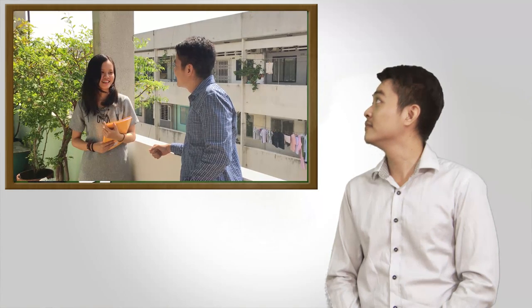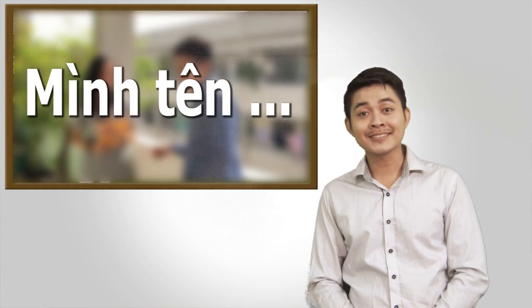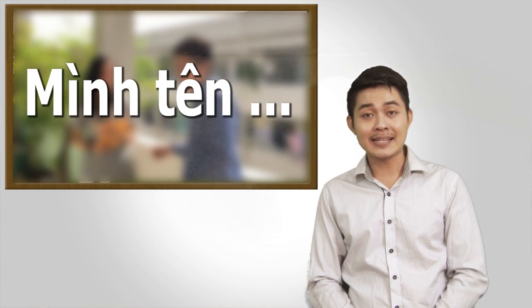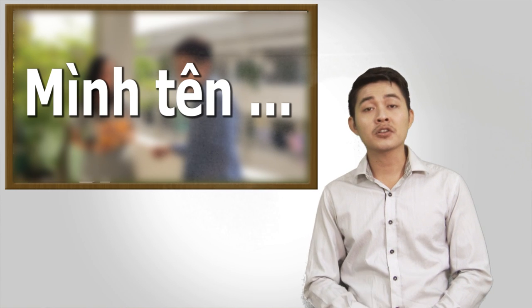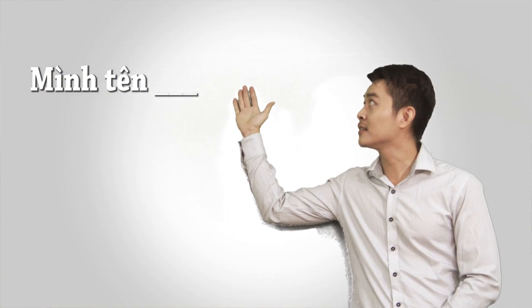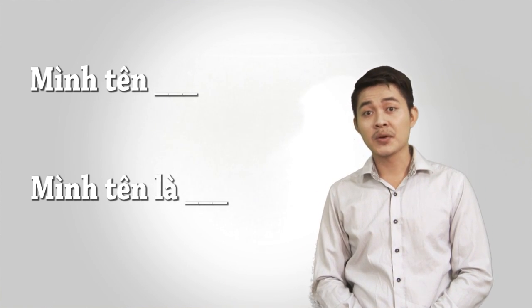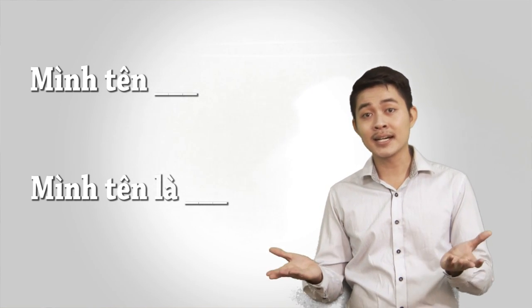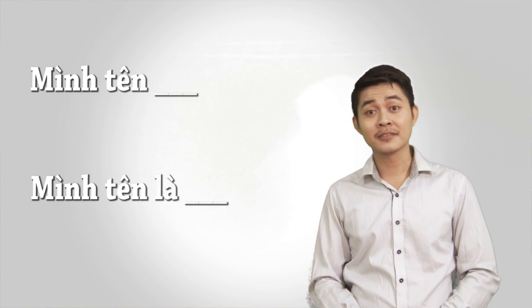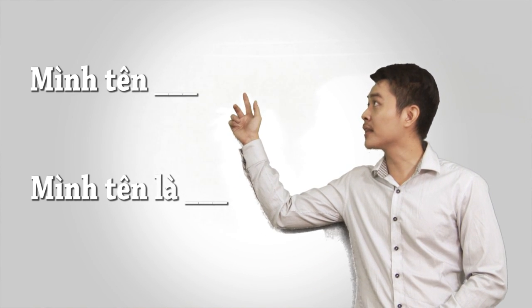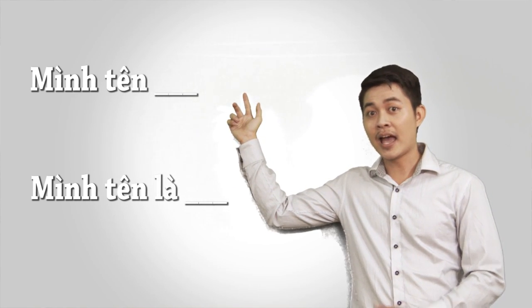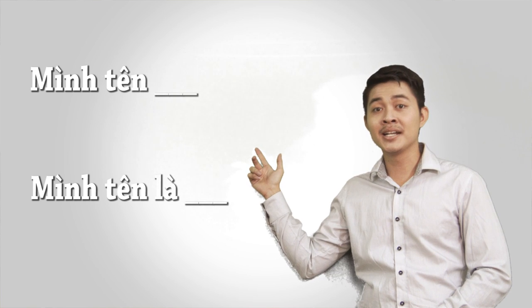Chào bạn, mình tên An. Mình tên — it means 'my name is' in English. You can also use Mình tên là. For example, if your name is John, you can say Mình tên John or Mình tên là John. Now repeat after me: Mình tên. Mình tên là.